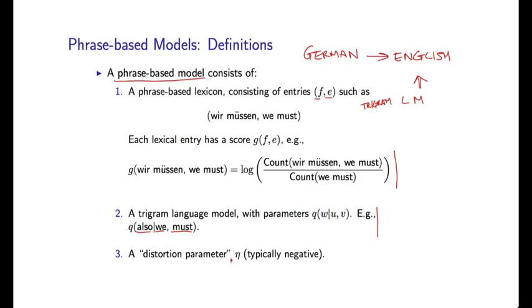And finally, we're going to have a distortion parameter. This is a single parameter, typically negative. As we'll see, this will penalize things from moving too far in the translation process when we start to use these phrases to translate particular examples. So that's essentially it. These are the three components of a phrase-based translation model.